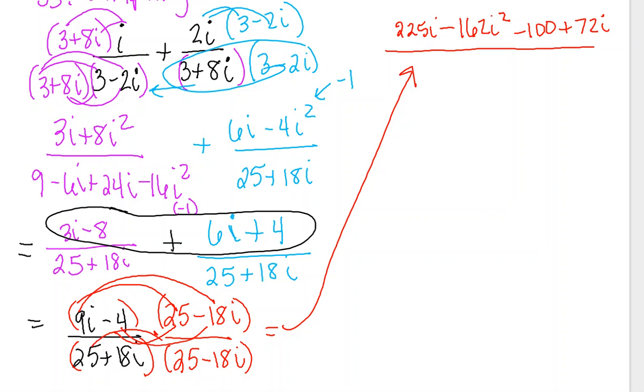Now I need to distribute the denominator. So I get 25 times 25, which is 625. I'm going to show all my work here, but you know this is going to be negative 450i and this is going to be positive 450i, and those end up canceling each other out.